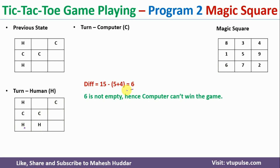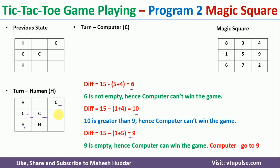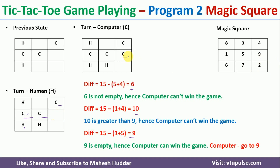The computer checks the third possibility: 15 minus (1 plus 5) equals 9. Position 9 is empty, so the computer can win by placing its move at position 9. The computer plays there and wins the game. This demonstrates how program 2 works using the magic square approach.